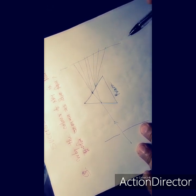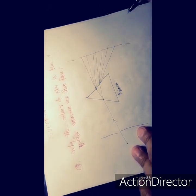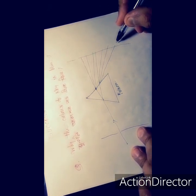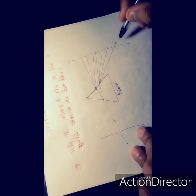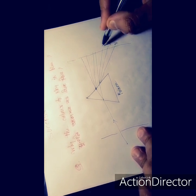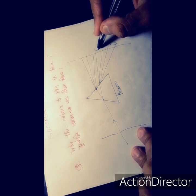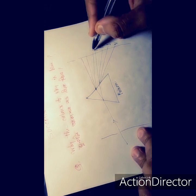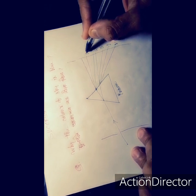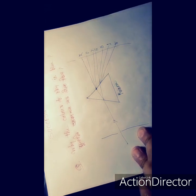The colors of the spectrum are violet, indigo, blue, green, yellow, orange, and red.